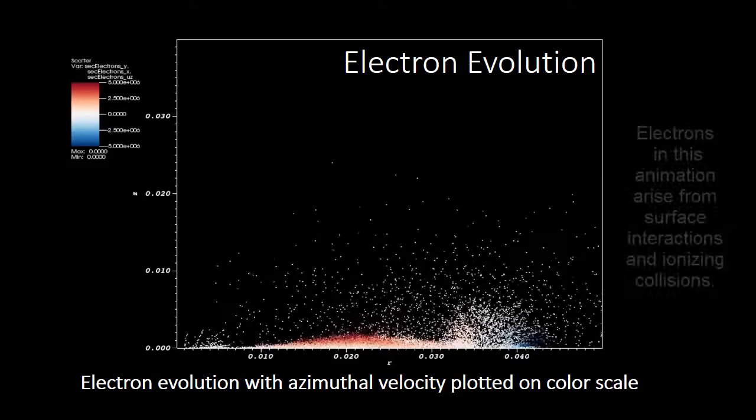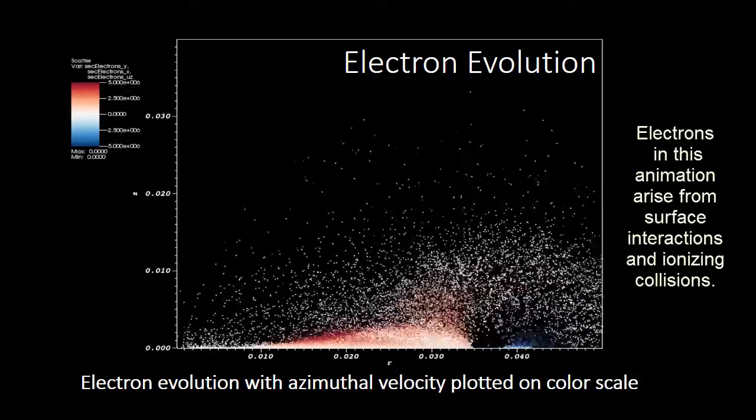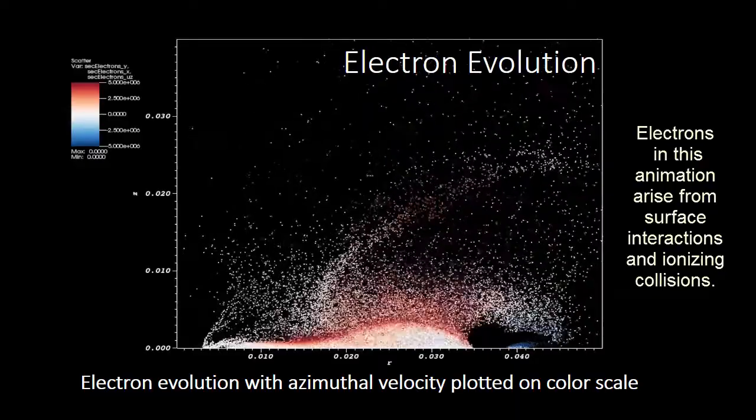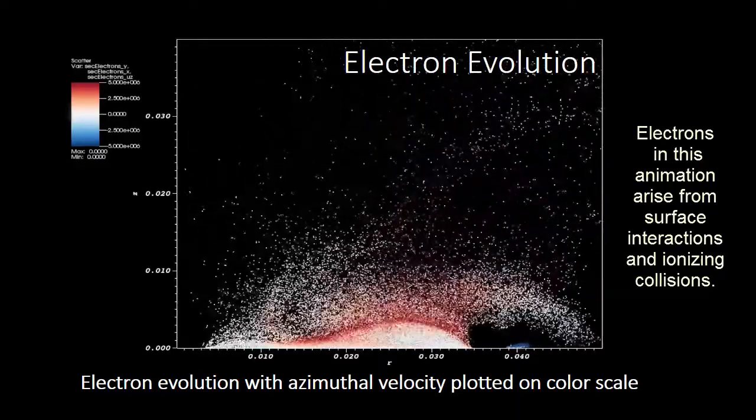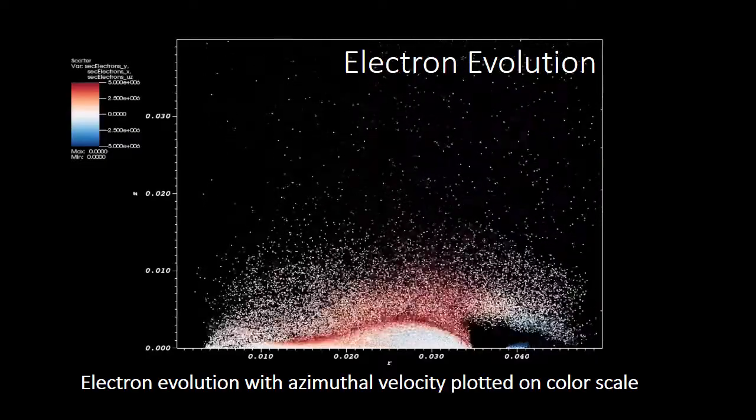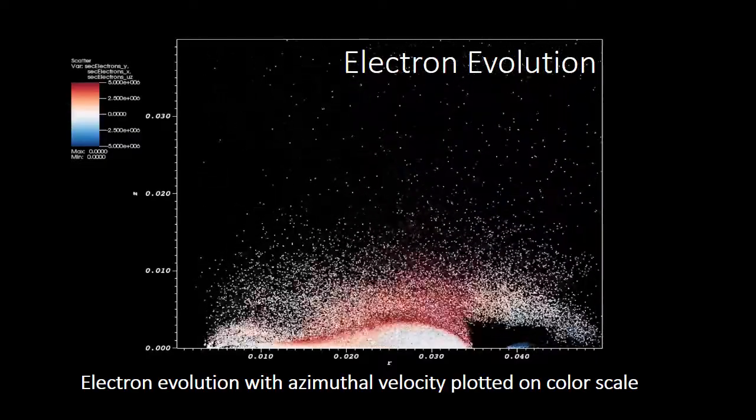This animation shows the particle collisions and surface interactions in the VSIM self-consistent algorithm flow. All electrons in this movie are generated via physical processes. The principal processes are secondary electron emission from the cathode and ionization of the background gas.